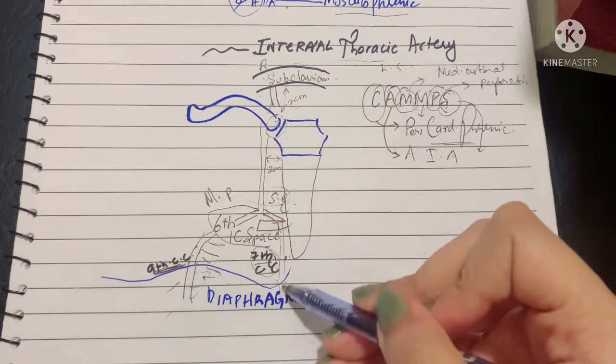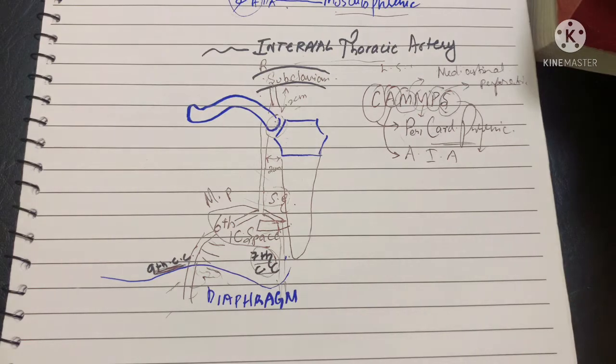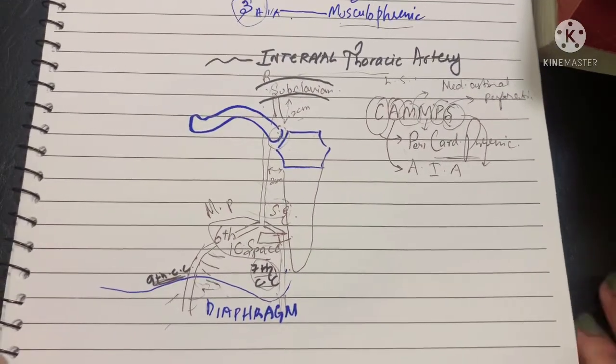These were the branches of the internal thoracic artery and overall discussion of it. That was all for the video today. Thank you so much for watching.